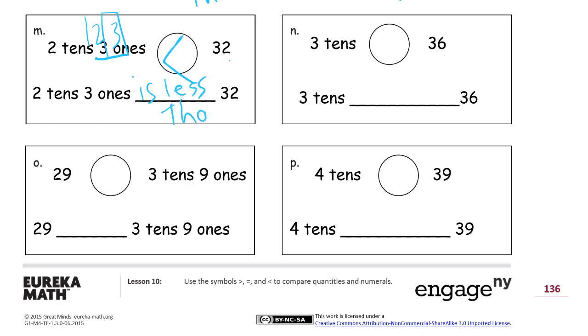3 tens. 3 tens is just 30 and 36. That's 6 more than 30. So the alligator's got to eat the 36. And 3 tens is less than 36.